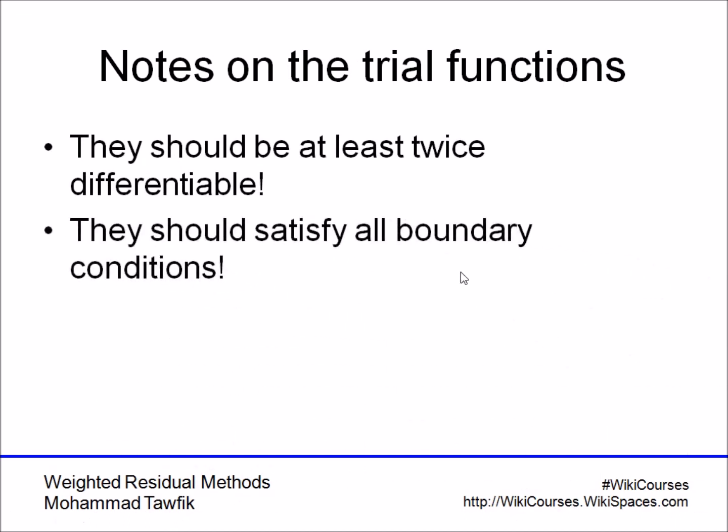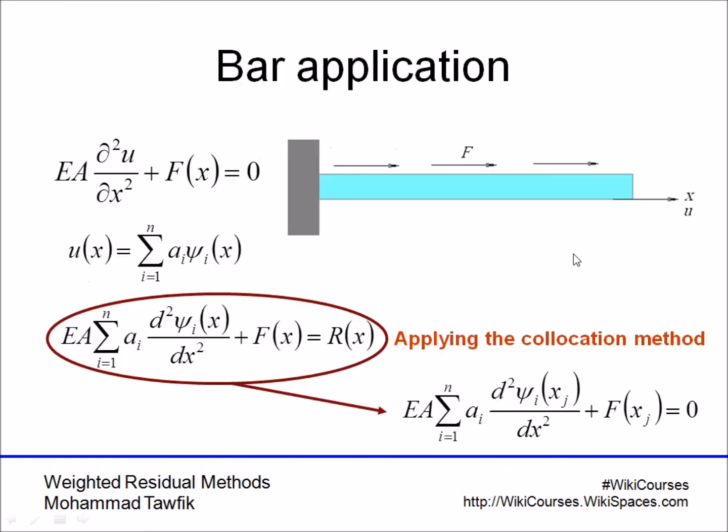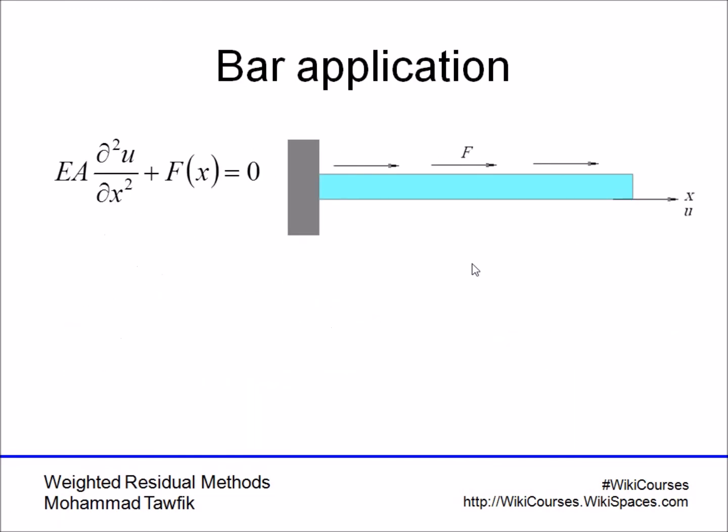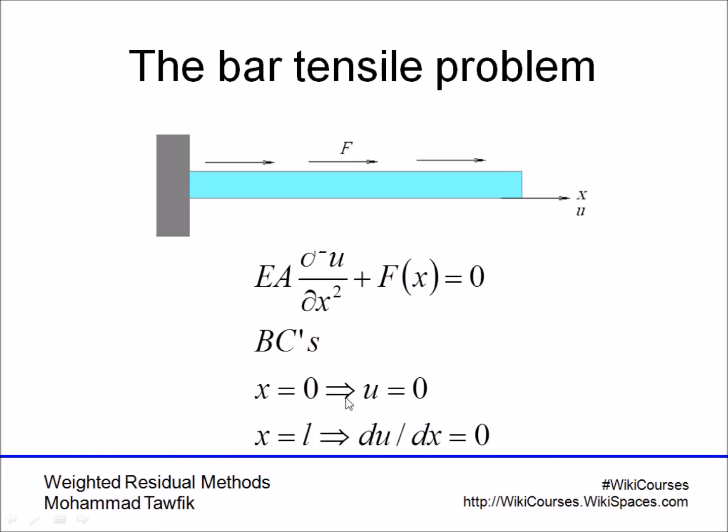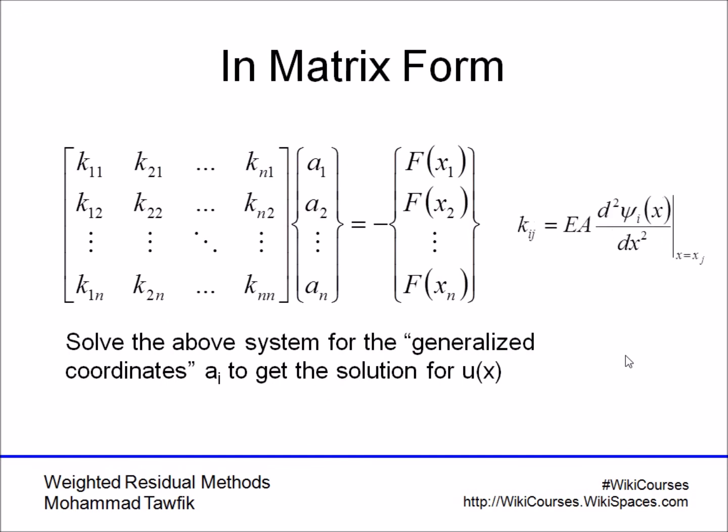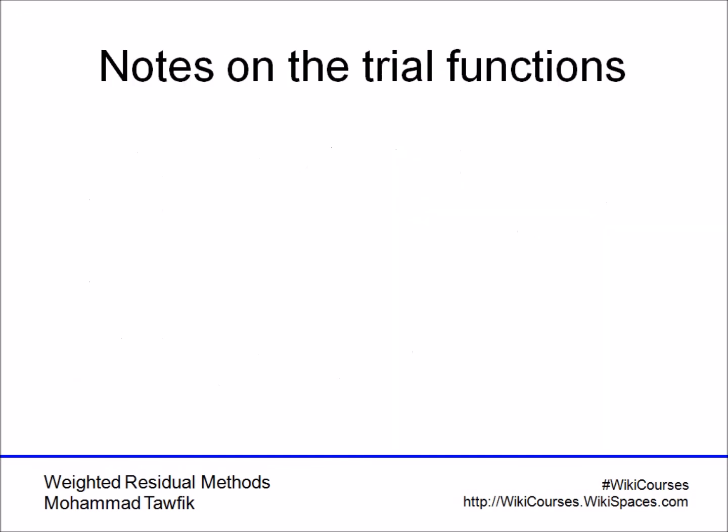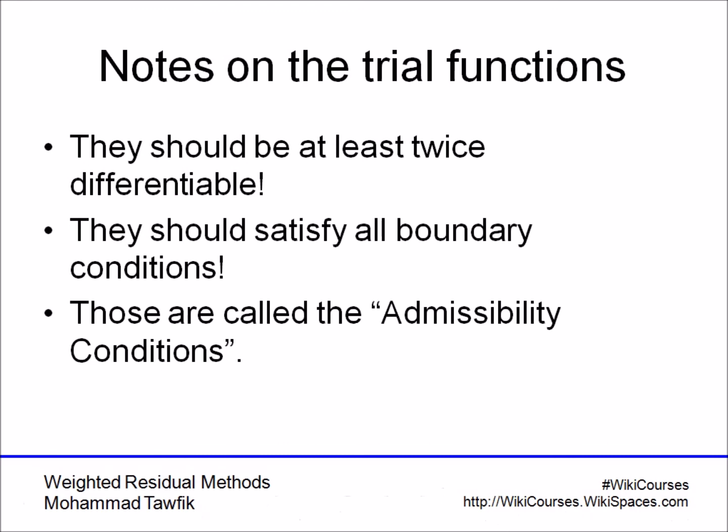The second condition is that it should satisfy all boundary conditions. So this function should satisfy the boundary conditions stated earlier, that it's equal to zero at X equals zero, and the slope is equal to zero at the other side. This might be the toughest part, to select a function that satisfies those boundary conditions. Both conditions are called the admissibility conditions. These are the conditions that allow a function, these are what admits a function into our solution.